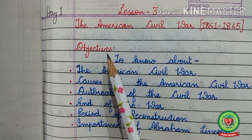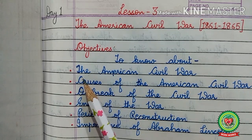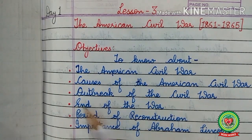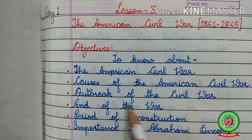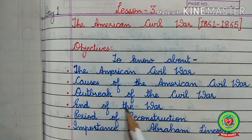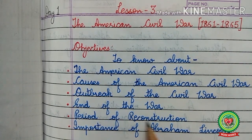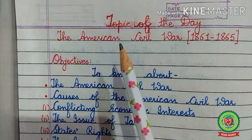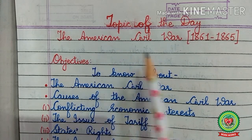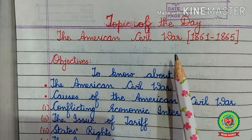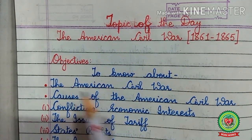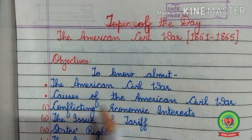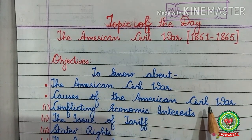The main objectives of the lesson are: you will come to know about what is the American Civil War, causes of the American Civil War, outbreak of the Civil War, end of the war, period of reconstruction, and importance of Abraham Lincoln. The topic of today is the American Civil War, and the objectives are to know about what is the American Civil War and the causes of the American Civil War.